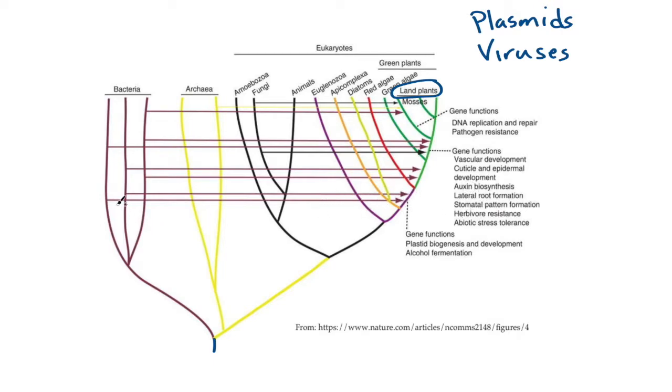And each one of these arrows represents a gene that they identified where it came from, in this case, a bacteria. And the relative timing of when that was transferred into an ancestor of the land plants.